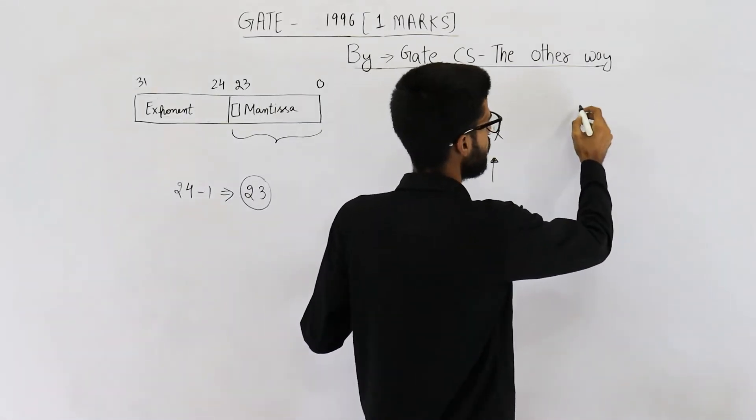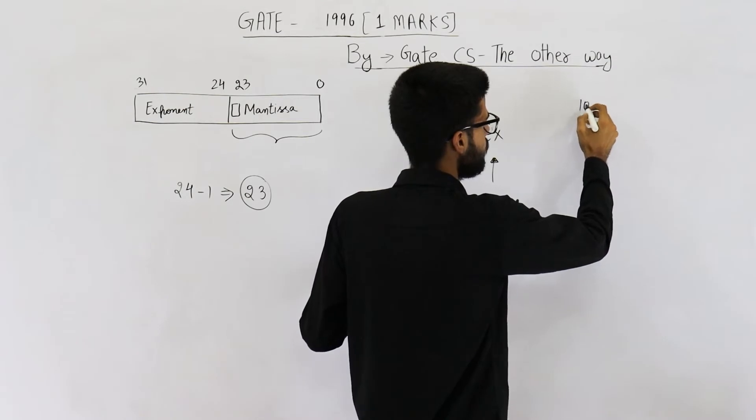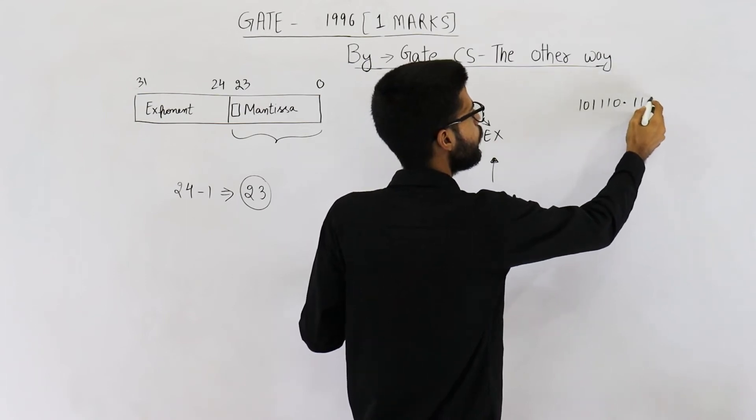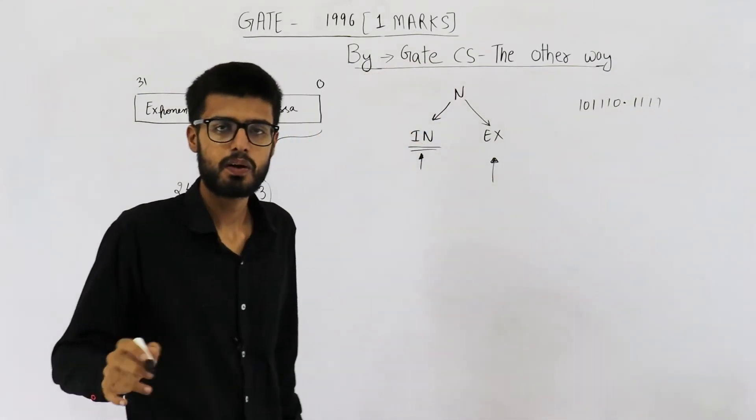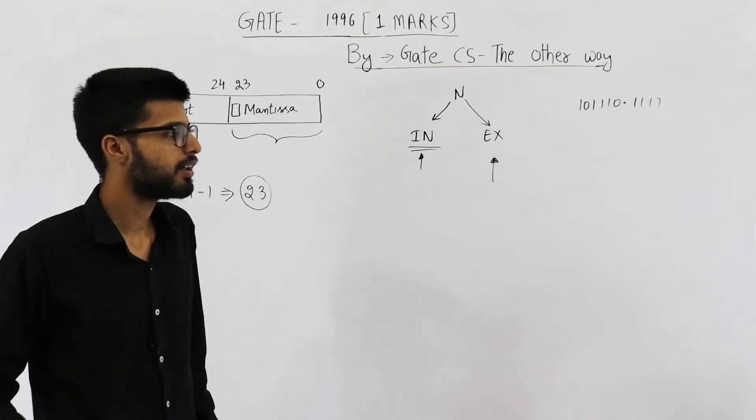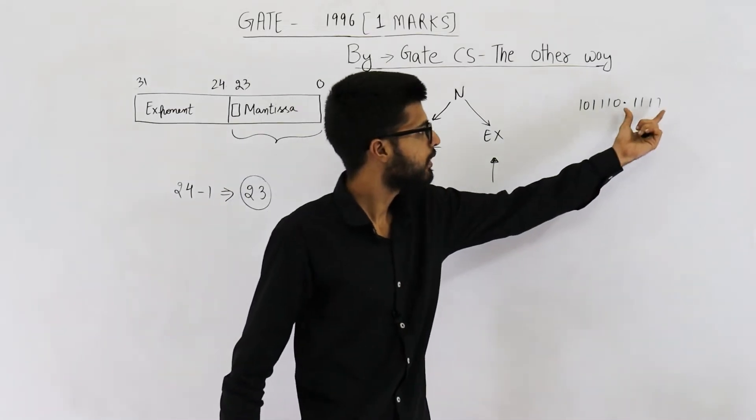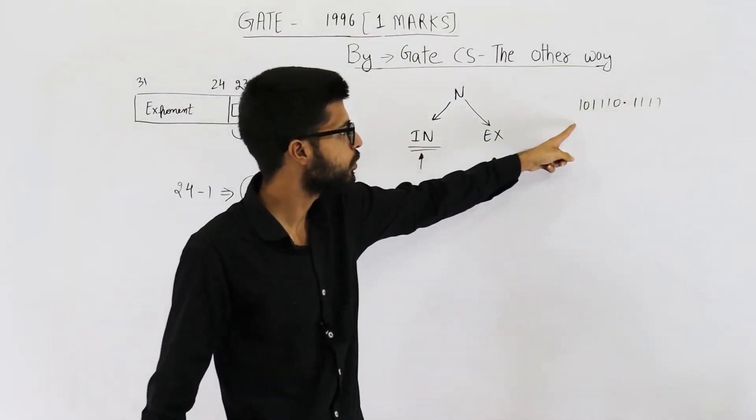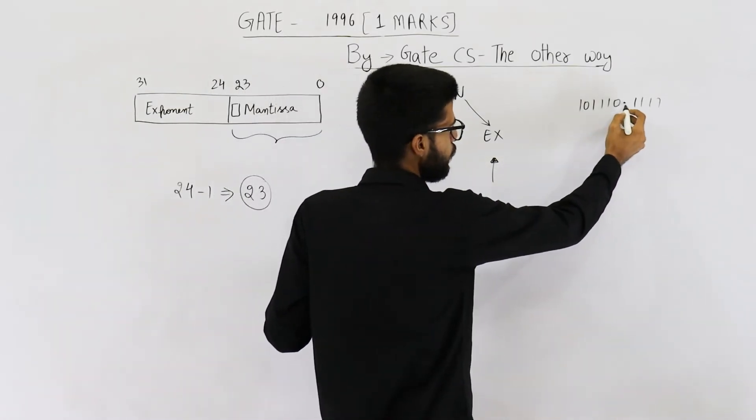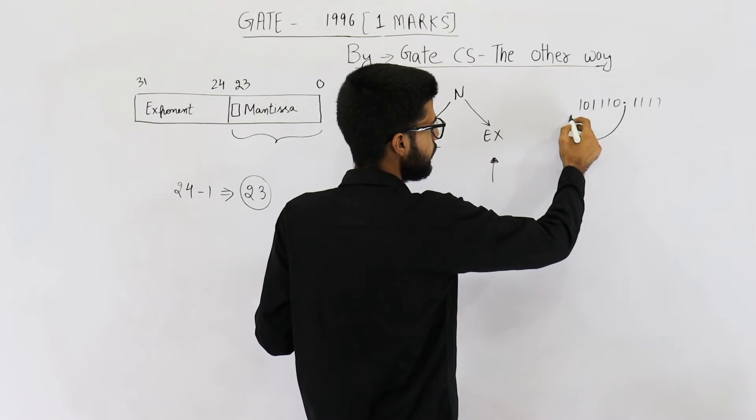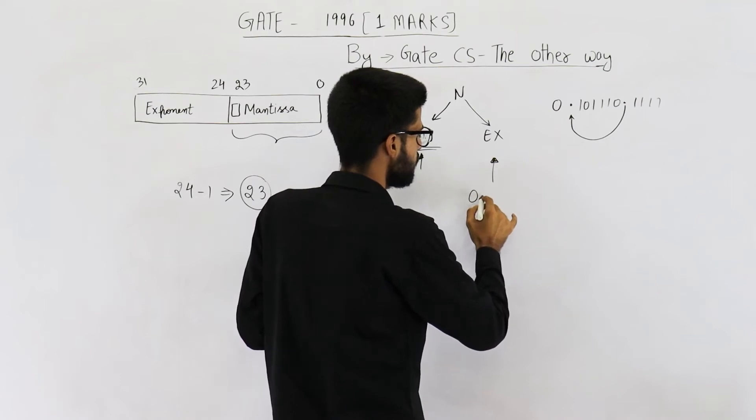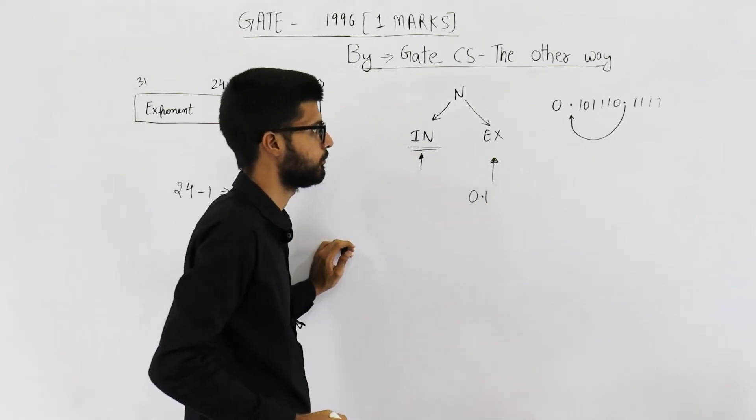Suppose there is some number 101110 decimal 111, decimal or radix point. Now, we need to normalize it before saving the mantissa. Because in this case, mantissa is only this much. But actually, we need to save this entire number as mantissa. See, for normalizing it, we generally bring the radix point here and write it in the form of 0.something. So, this number will start from 0.1.